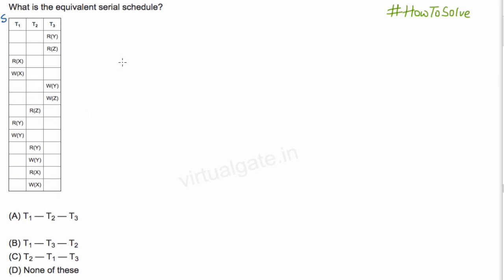To check this, first we draw a precedence graph. How do we draw a precedence graph? We start with taking nodes equal to the number of transactions, that is we have three transactions here, so we will take three nodes: 1 which will represent transaction 1, 2 for transaction T2, and 3.